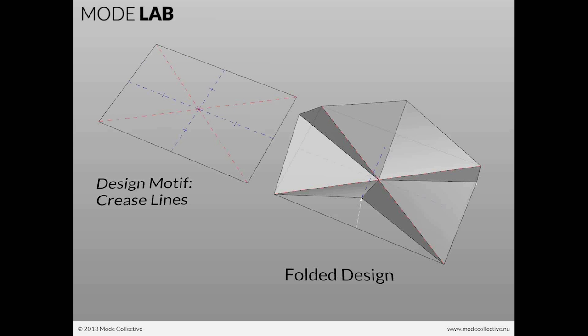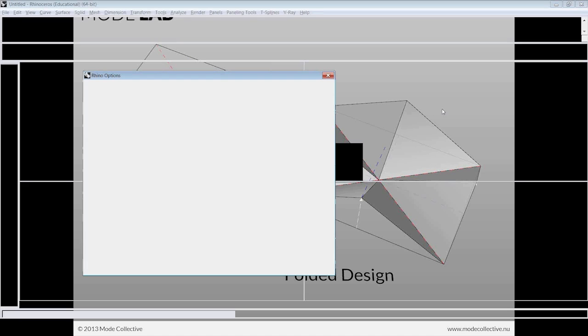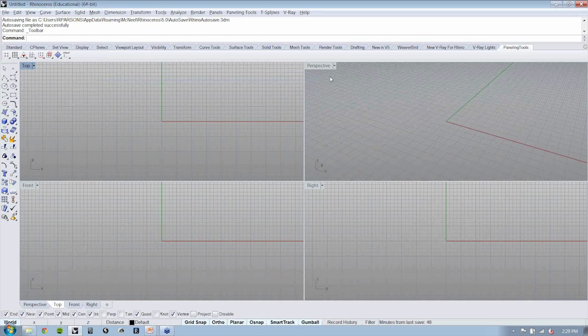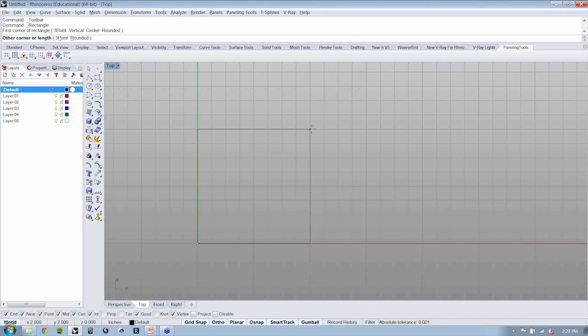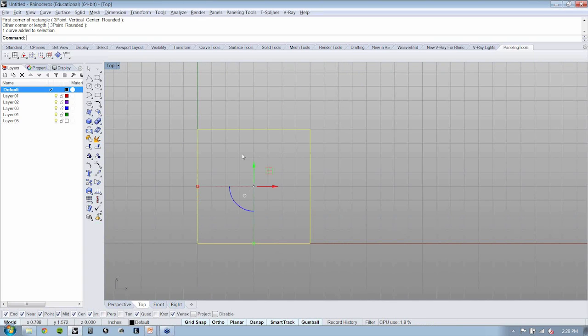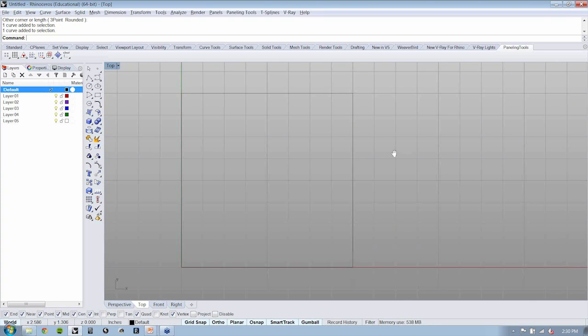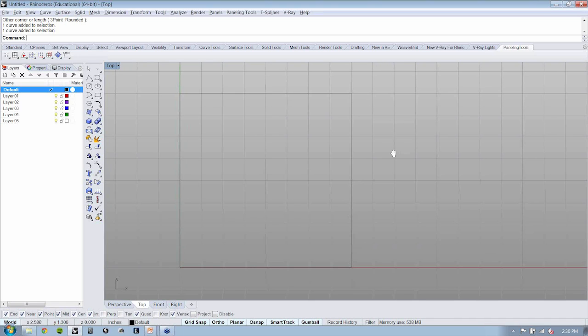Let's go ahead and take a look at that in Rhino. With my layer manager open, I'm going to create a rectangle. I'm using my ortho as well as my grid snaps, I also have planar on, which is really just about ensuring that I'm snapping to a grid.